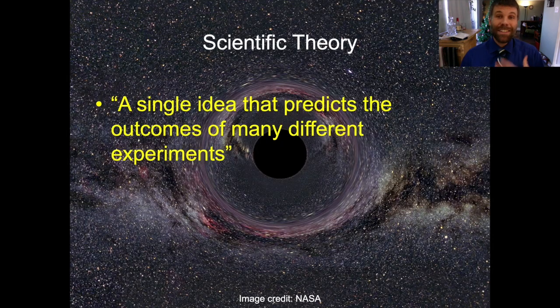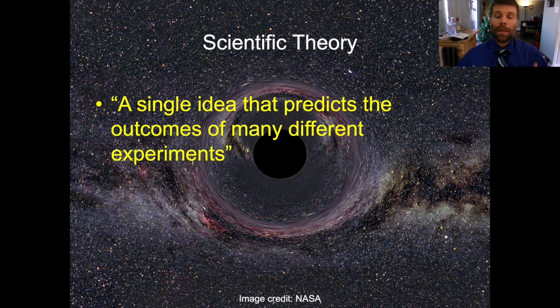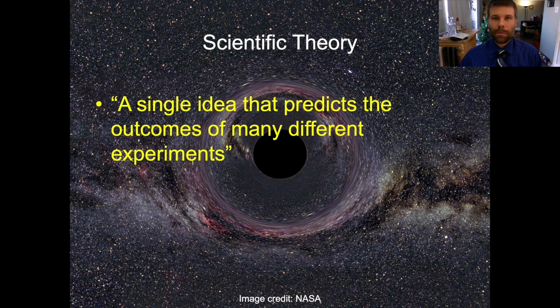Scientific theory is a single idea that correctly predicts the outcome of many different experiments. There are lots of examples of scientific theories out in the world, literally hundreds at least. Try and think of some. Pause the video for a second and try and come up with a mental list. Go ahead, I'll wait.